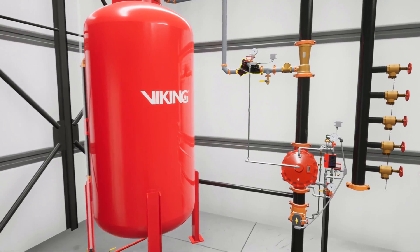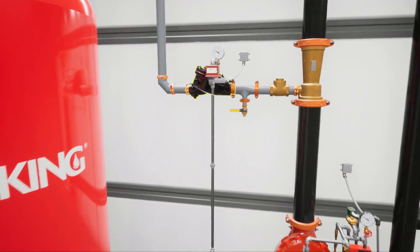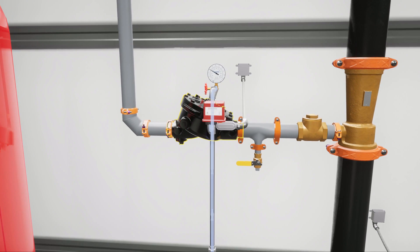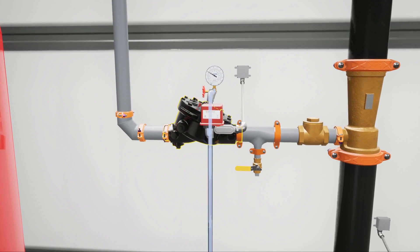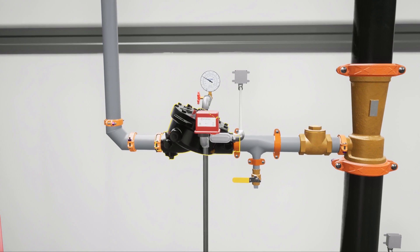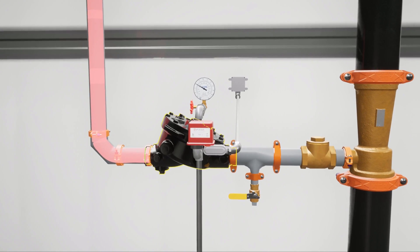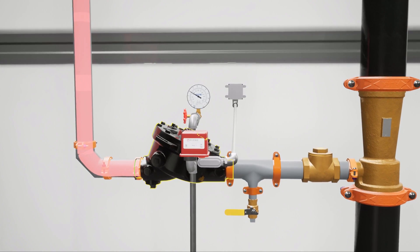The bladder tank concentrate piping leads to the concentrate control valve that is held closed by priming water. The concentrate control valve is holding back the foam concentrate supply until the system is activated.